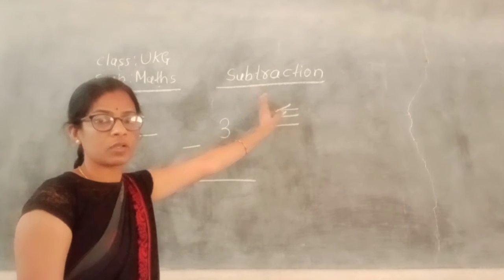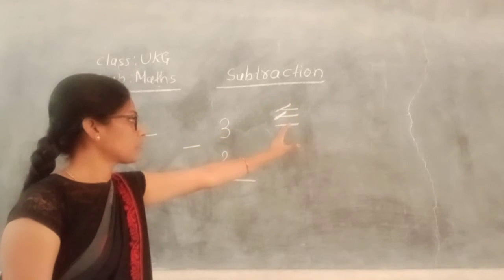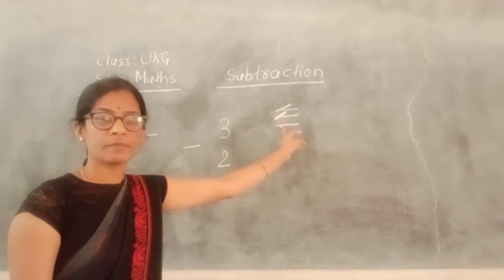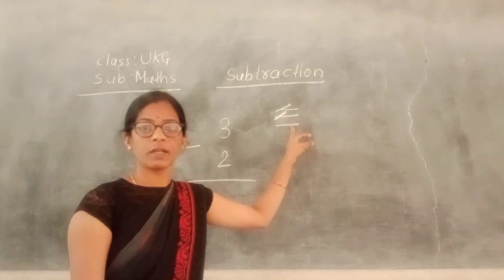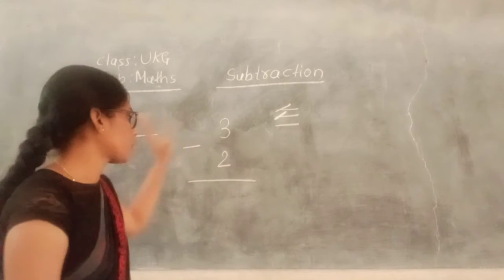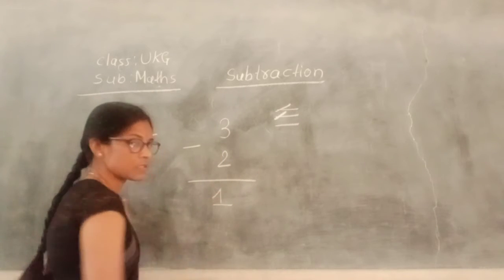Cross one, two, three. Cross one, two. Remaining how many lines here? One. So you write here number one. Understood? Three minus two equals one.